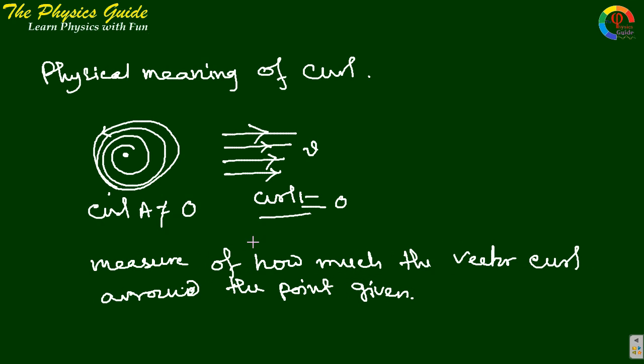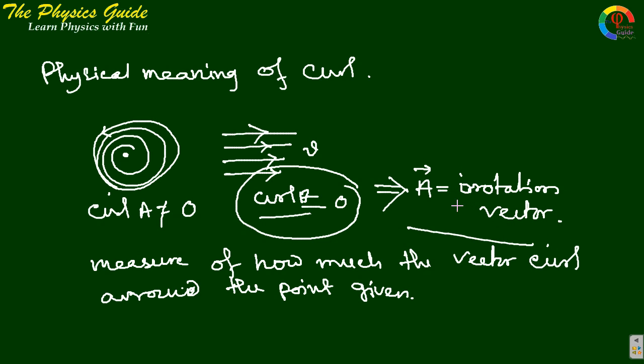So if curl A equals to 0, then we can call A an irrotational vector. Or in force field, A is also called conservative field. If A equals to a force field or energy field and del cross A equals to 0, then we can also call A a conservative field.